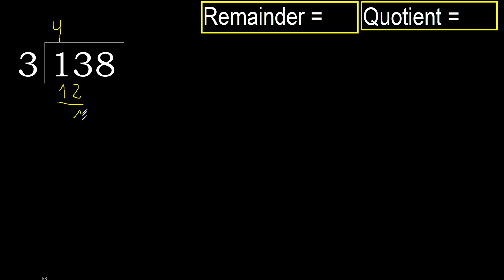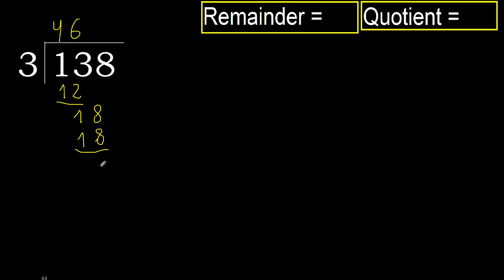OK, subtract. Next: 18. 3 multiplied by 7 is 21 — 21 is greater. 3 multiplied by 6 is 18 — 18 is not greater. OK, subtract 0. Next.